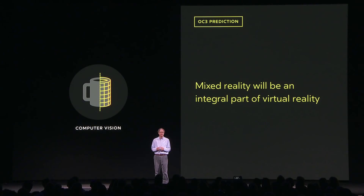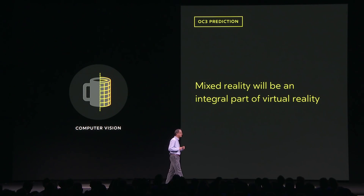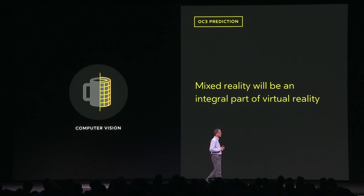Of course, freedom of motion in VR comes with the challenge of moving around safely, and here we come to computer vision and mixed reality — that is, freely mixing the real and virtual worlds by reconstructing the real world and bringing desired parts of it into VR.